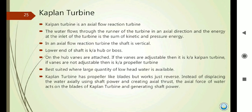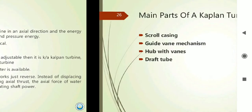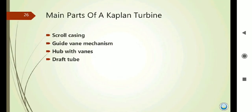The Kaplan Turbine has adjustable pitch blades, working in reverse compared to a propeller — instead of dispersing water, it uses the axial force of water to activate the turbine and generate shaft power. The main parts of the Kaplan Turbine are: scroll casing, guide vane mechanism, runner vanes, and draft tubes.